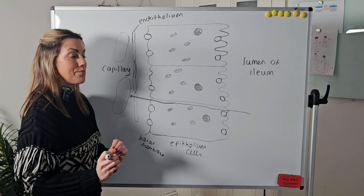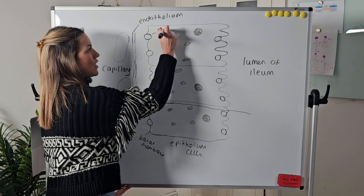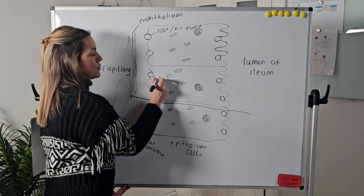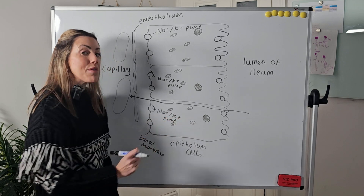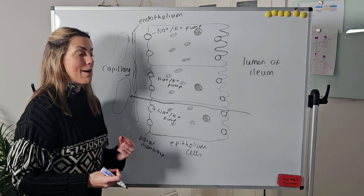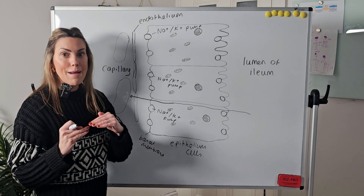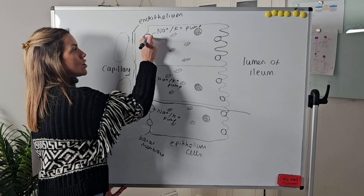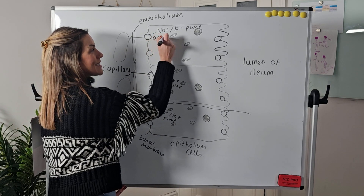The mechanism actually involves active transport, co-transport, and facilitated diffusion, which is why students find it so complicated. Let's start at the beginning. This protein here is a sodium-potassium pump. I've only drawn one on each epithelial cell but in reality these epithelial cells are adapted to have absolutely loads of sodium-potassium pumps. They are located on what we call the basal membrane — the bottom membrane of the epithelial cells, the membrane closest to the blood capillary. These pumps are going to actively transport sodium ions out of the epithelial cells and into the blood.